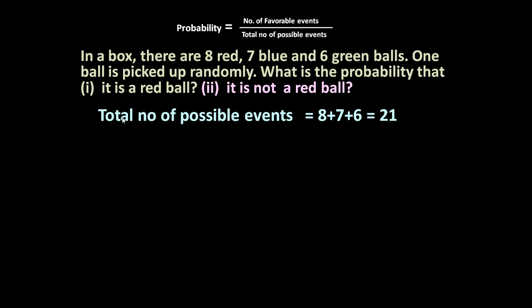For total number of possible events: the box contains 8 red, 7 blue and 6 green balls. So any one ball is picked up — it may be red, blue or green. Total possible events = 8 + 7 + 6 = 21. We can pick any one out of the 21 balls, so total number of possible events is 21.